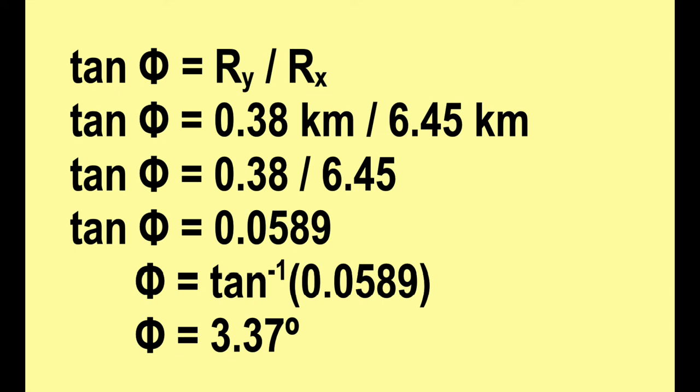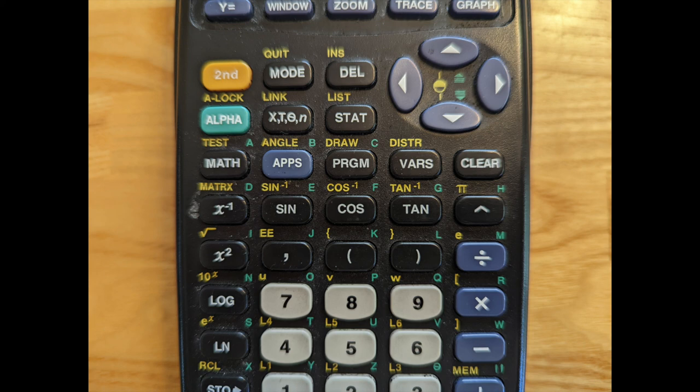That is not the angle, that is the tangent of the angle. So now, how do we get from the tangent to the angle itself? We use the function called inverse tangent, or arctangent. If you look at the tangent button on my calculator, you'll see that written above it in yellow is tan with a minus 1. That stands for inverse tangent.